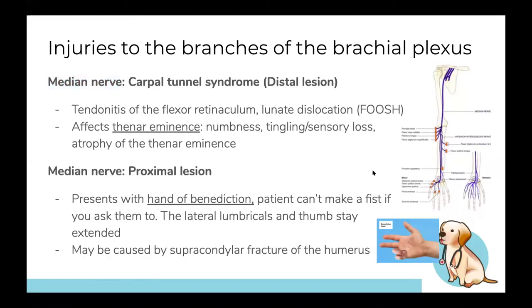Carpal tunnel syndrome is a distal median nerve injury. It can be caused by tendonitis of the flexor retinaculum or lunate dislocation — a FOOSH injury (fall on outstretched hand) can dislocate the lunate, which then irritates the median nerve. This affects the thenar eminence, causing atrophy, tingling, and numbness — classically associated with carpal tunnel syndrome.